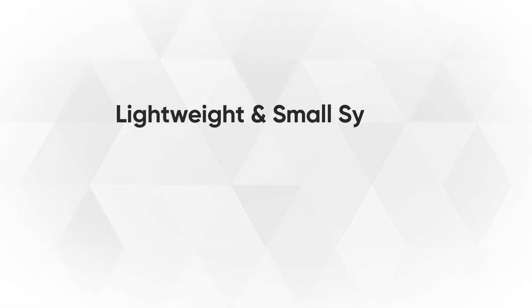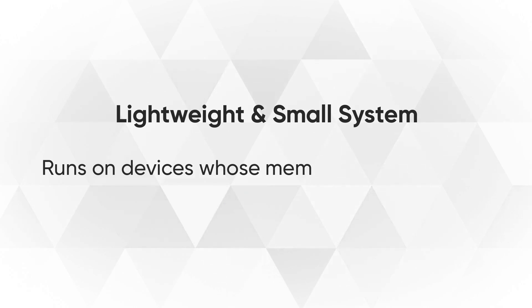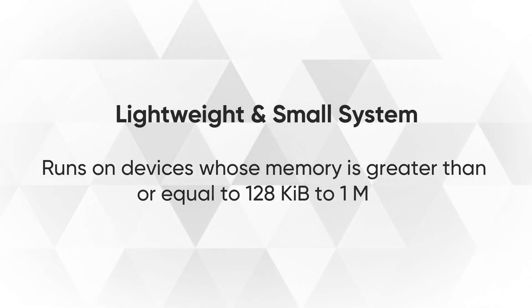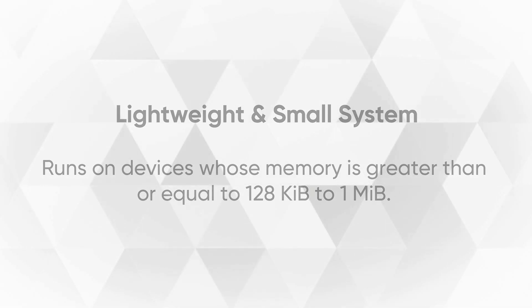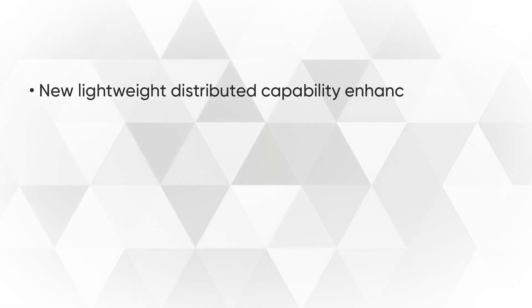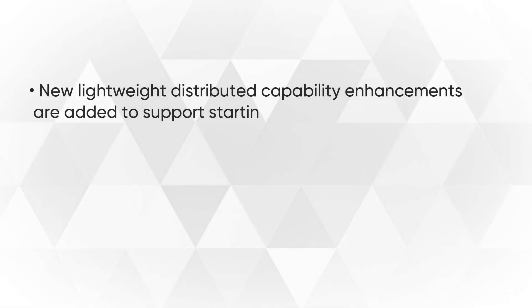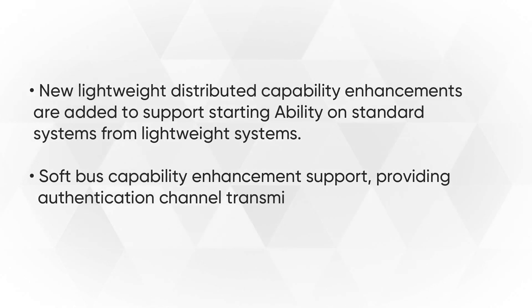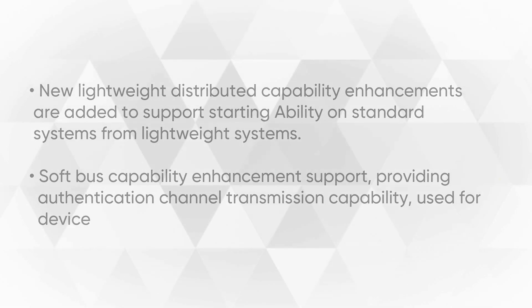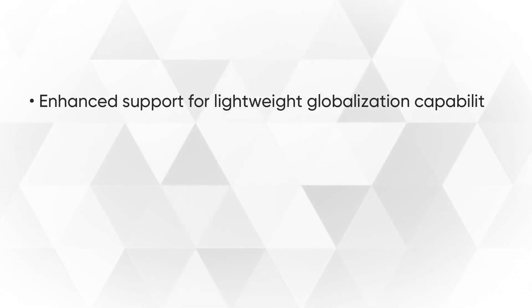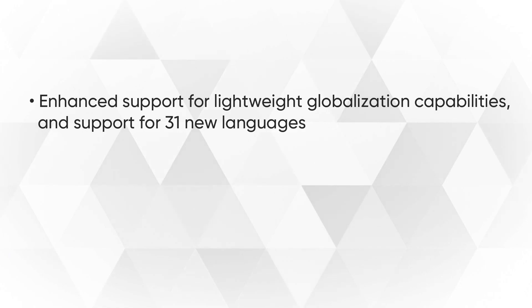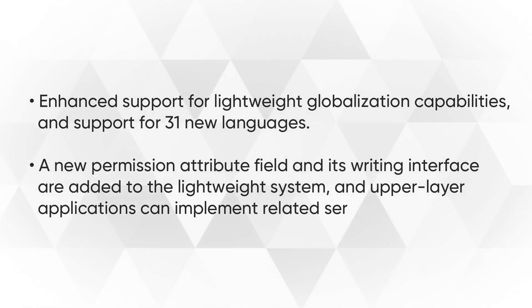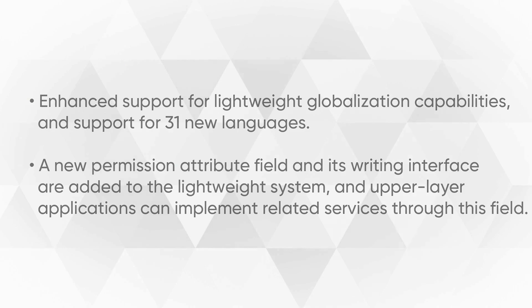Second, new features for the lightweight and small system that runs on devices whose memory is greater than or equal to 128 KiB to 1 MiB. New lightweight distributed capabilities enhancements are added to support starting ability on the standard system from the lightweight system. Support for software capability, lightweight globalization capabilities, 31 new languages, new permission attribute field, and more functions are added.